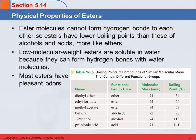Physical properties of esters. Esters can't form hydrogen bonds because those oxygens are bonded to carbon atoms, not to hydrogen atoms. So one ester molecule cannot hydrogen bond with another ester molecule. Therefore their intermolecular forces are weaker than with the carboxylic acids, and their boiling points and melting points will be lower.